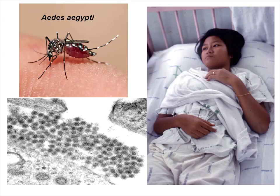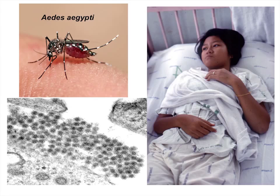The transmission cycle is relatively simple. It's primarily this mosquito, Aedes aegypti, the same mosquito that transmits yellow fever, chikungunya, Zika, and dengue. A human gets infected, circulates virus in peripheral blood, Aedes aegypti comes and takes a blood meal, goes through that incubation, bites another person, and transmits it. This is an electron micrograph showing the virus.